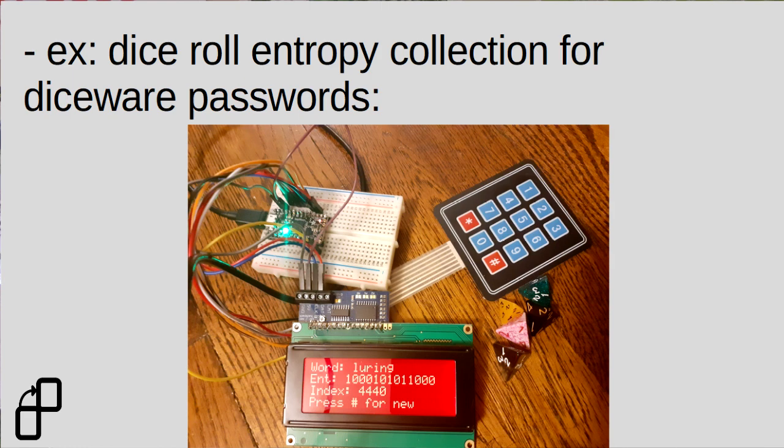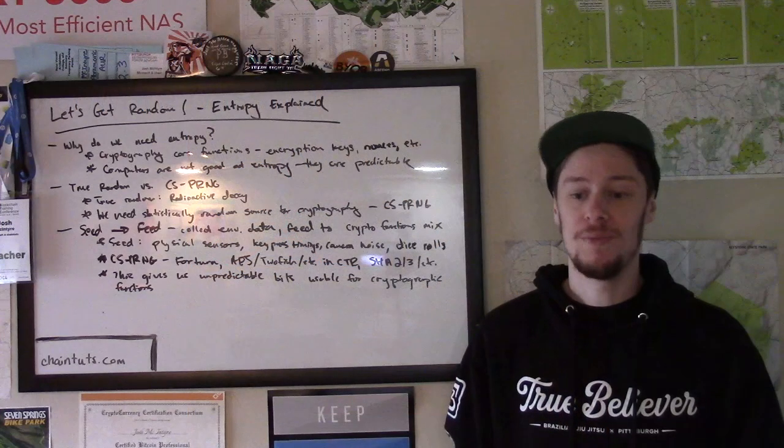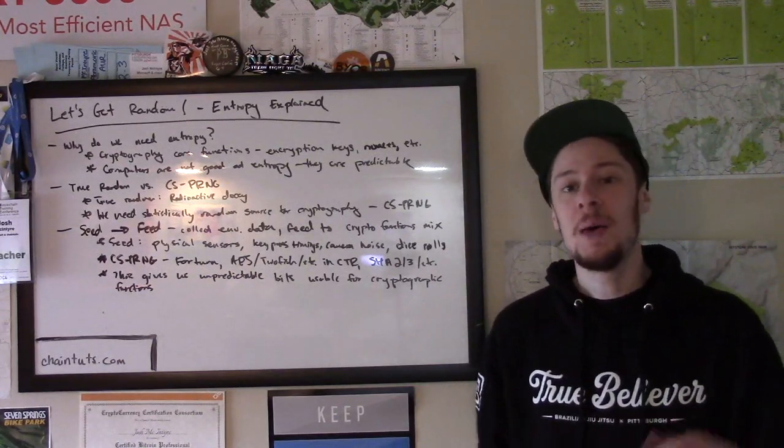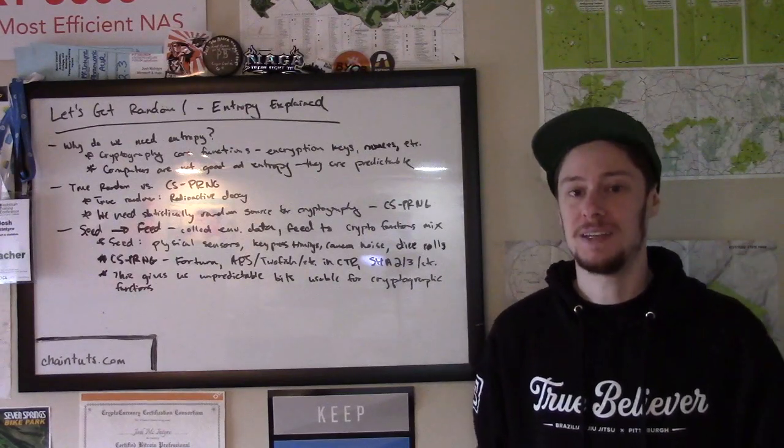If you use a four or eight-sided die, it shows you the exact bits that you're generating. A four-sided die gives you two bits of entropy per roll. An eight-sided die gives you three bits of entropy per roll. You can of course use a regular six-sided die for this as well, but I think it's a little bit harder to understand the bits because it gives you a fractional amount of entropy per roll.